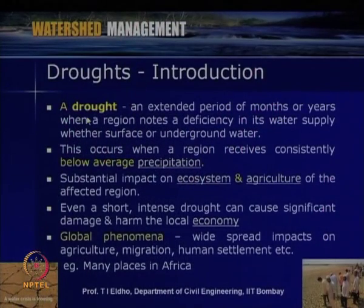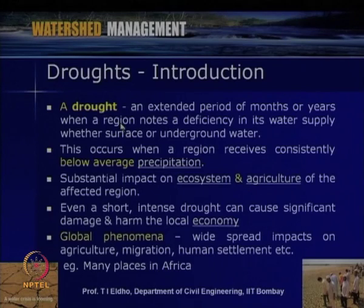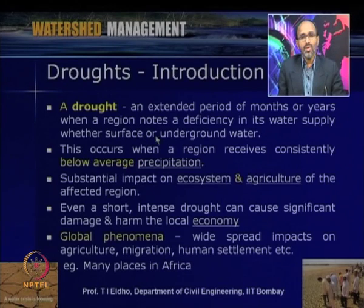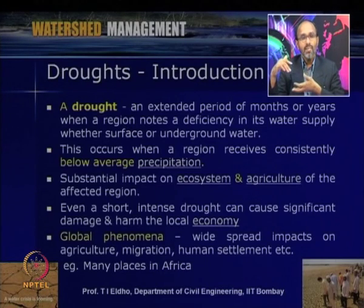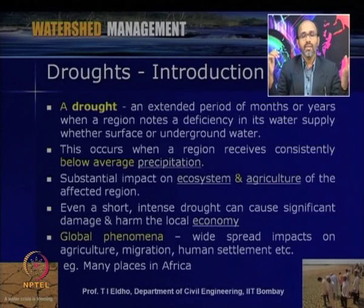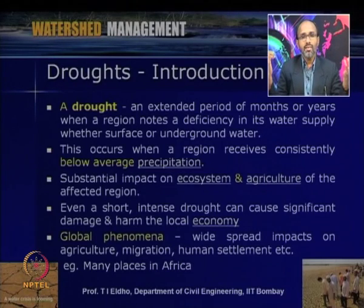The definition of a drought is: a drought is an extended period — say for months or years — when a region notes a deficiency in its water supply, whether surface or ground water. Drought means there is no sufficient water — surface water or ground water — not only for a few months, but for a number of months or even a few years. We can say that a location of a watershed is amenable to droughts.